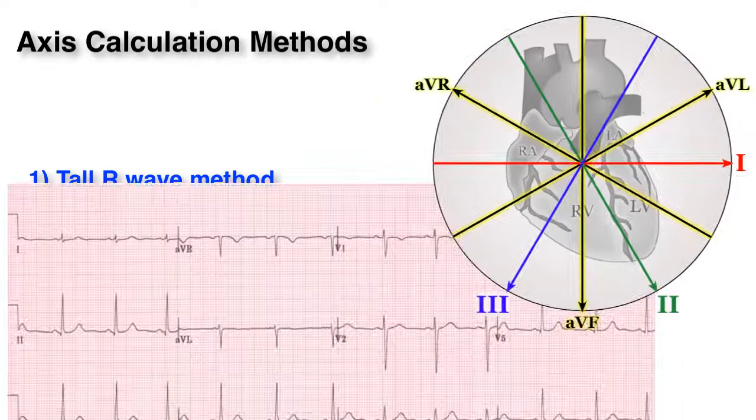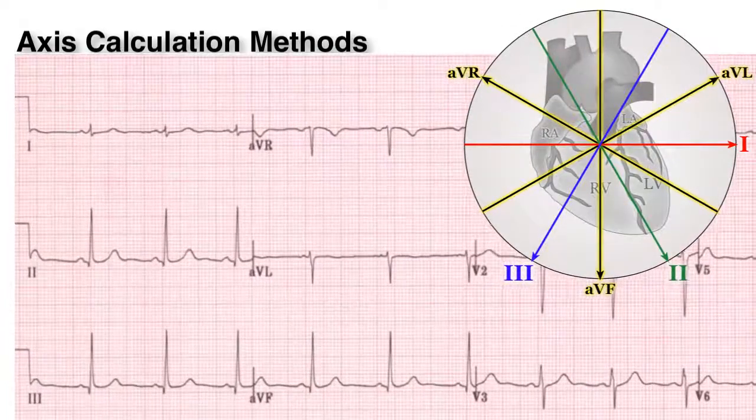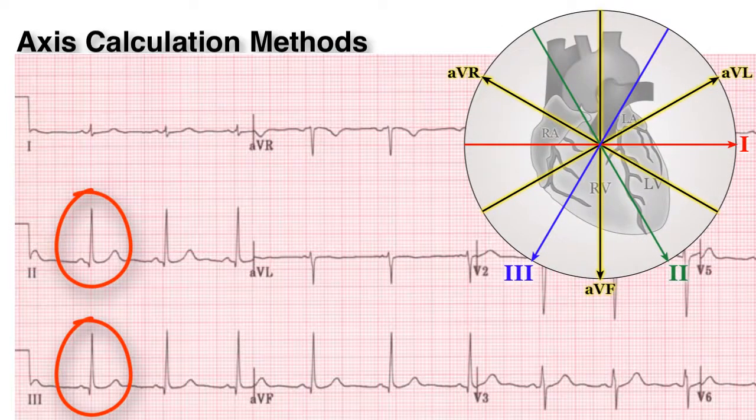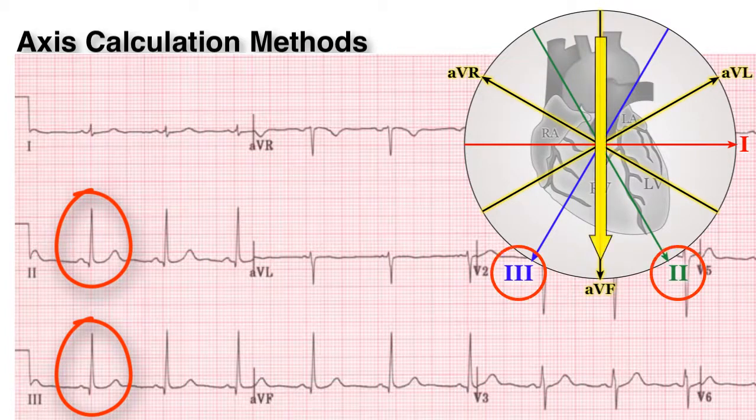For example, in this EKG, we circle the two tallest R-waves which are equal height. The mean QRS axis will therefore be directed somewhere between both leads.